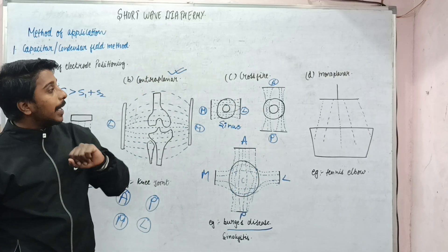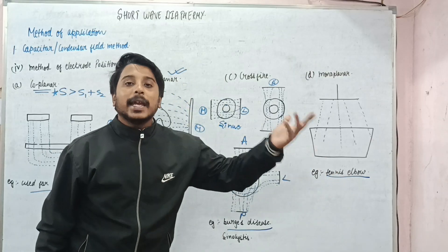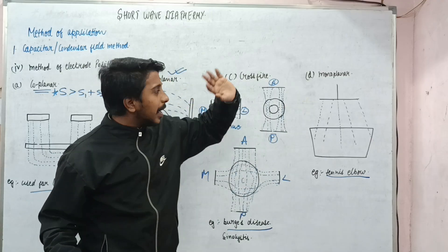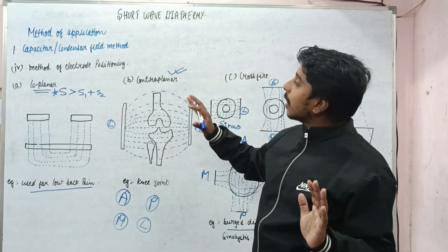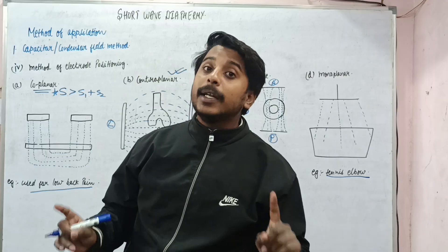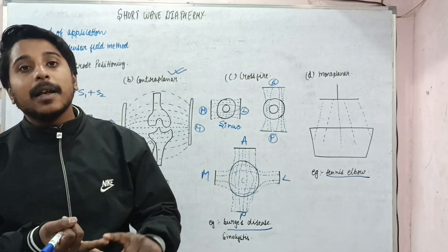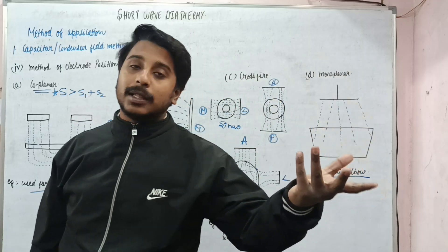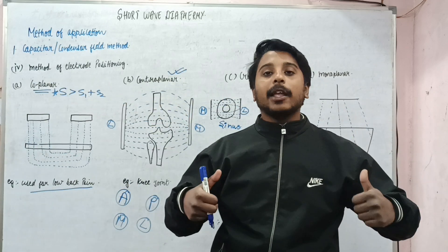Next is the monoplanar method. Here only one electrode is used for a very small area such as tennis elbow. The second electrode is placed either at the side or at the cervical or thoracic spine. This is a very weak method with less heating. These are the four methods of electrode placement under the capacitor or condenser field method. In the next lecture we will study the cable method, also known as inductothermy. Thank you.